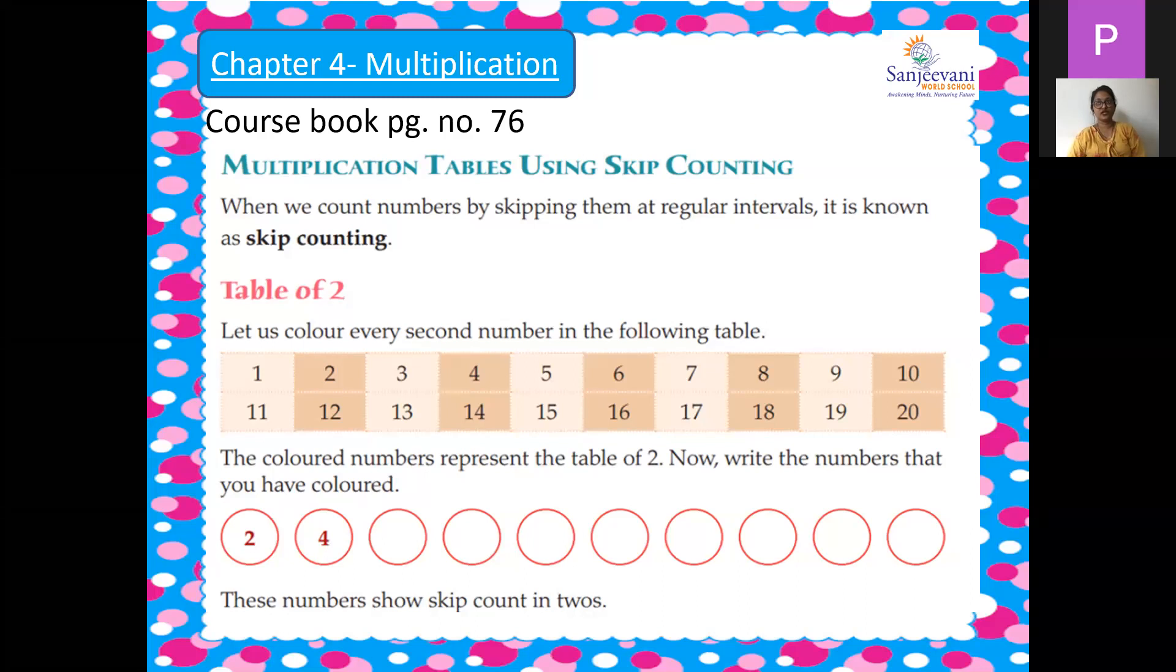So 2, 4, 6, 8, 10, 12, 14, 16, 18, 20. So the colored numbers represent the table of two. So now whatever number we have colored over here, we will write in this circle. That is 2, 4, 6, 8, 10, 12, 14, 16, 18 and 20. So these numbers show the skip counting of twos.